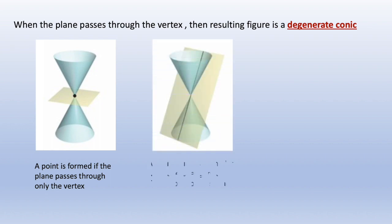We also have a straight line. This is formed if the plane is tangent to the double cone's surface.